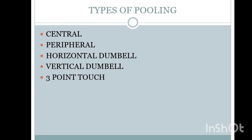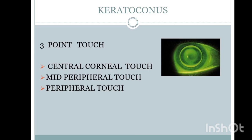Horizontal dumbbell means the horizontal meridian is steeper than the vertical meridian; vertical dumbbell is found in case of a steep vertical meridian. Three-point touch is the ideal fluorescent fit, seen in a good keratoconus fitting. In three-point touch there is a touch in the center, and at the 3 o'clock and 9 o'clock peripheral positions — those three positions form the three-point touch: central corneal touch, mid-peripheral touch, and peripheral touch. Three-point touch is the ideal and optimum fitting condition for a keratoconus patient.